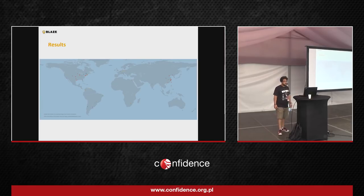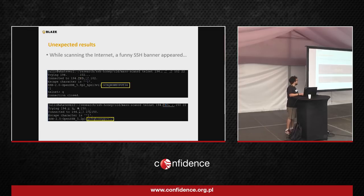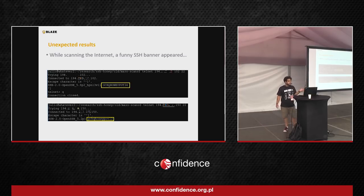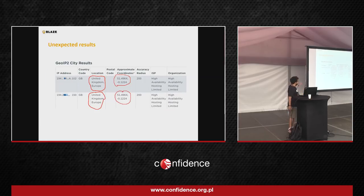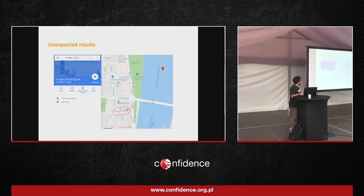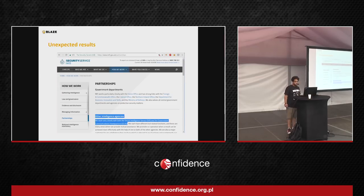There was a very unexpected and funny result during the scanning — a very funny banner that appeared: 'GCHQ Honeypot 34' and 'GCHQ Honeypot 12.' GCHQ is the equivalent of the NSA in Britain. The IP addresses are redacted, but if you put them in MaxMind you see they're from the United Kingdom, and the coordinates in Google Maps put them very close to MI5, the security service of Britain. The MI5 website says they work very closely with GCHQ. I'm not sure if this was an elaborate joke or if somebody at GCHQ just doesn't know how to configure their own honeypots.